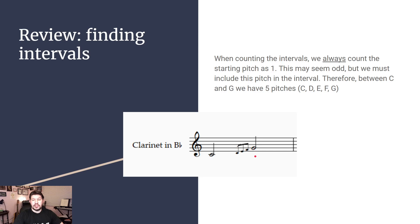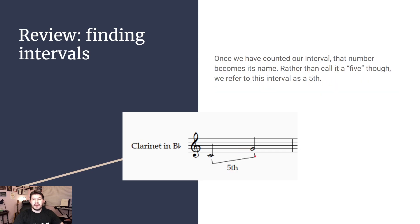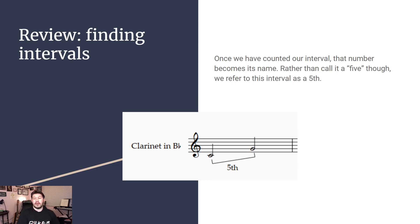So those pitches are C, D, E, F, and G. Once we have that, the number is going to become its name, so the interval name is going to be a fifth. It is not a five because that means something different in music. We refer to it as a fifth to talk about the distance between those two notes, and that's universally understood by musicians — if you say we want to go a fifth above C, most musicians with training will know that we're talking about the note G. Calling it a five would not be the correct answer; we call it a fifth.